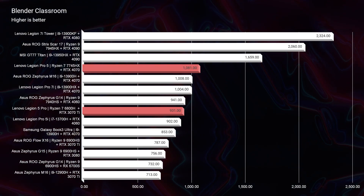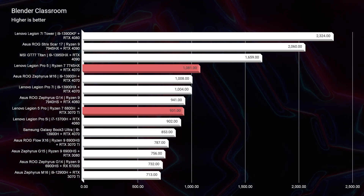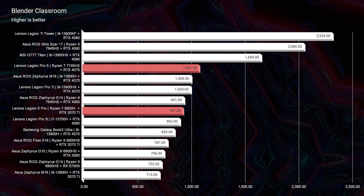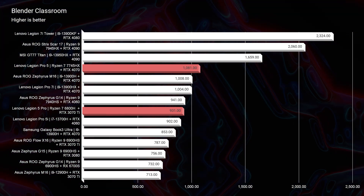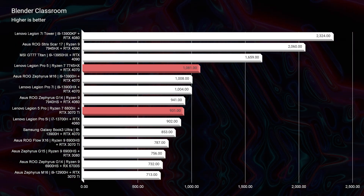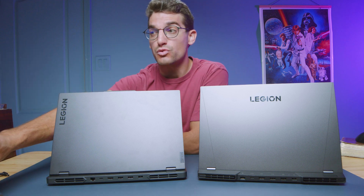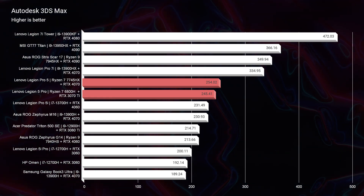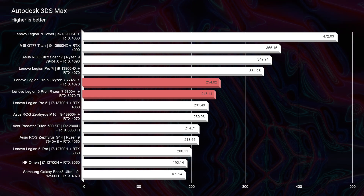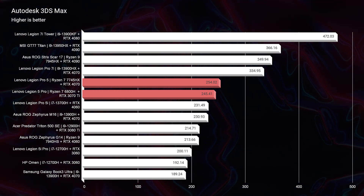Taking a look at Blender Classroom, you can see that the 3070 Ti scored a 931 and the 4070 scored a 1081 — so over 100 points of difference in Blender Classroom. However, when we get into 3D modeling, there's only a 20-point max difference between the RTX 4070 and the 3070 Ti.